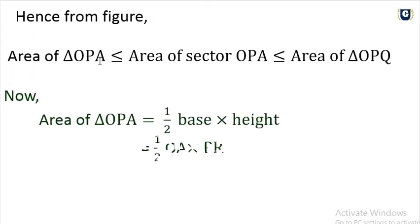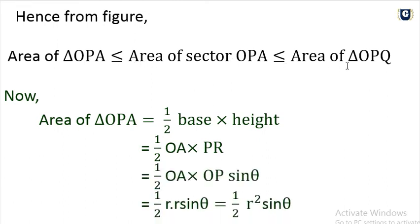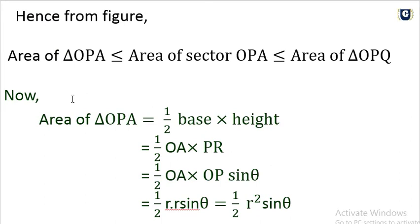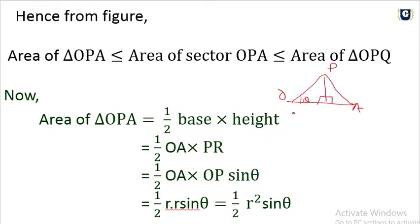From the figure: area of triangle OPA is less than or equal to area of sector OPA, which is less than or equal to area of triangle OPQ. Now for the area of triangle OPA: one half times base OA times height PR.